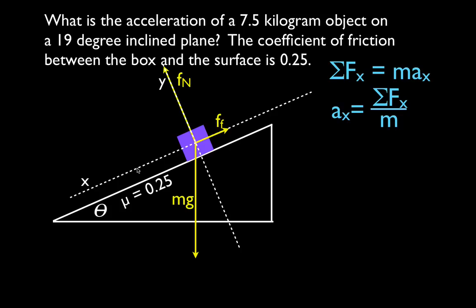The object is accelerating down and to the left, but no single force acts directly in that direction — that force comes from the x component of the weight. The weight force has a y component and an x component. We break this vector into its x and y components; the y component acts along the y axis opposite the normal force, and they are equal in magnitude and opposite in direction because the object doesn't accelerate in y.